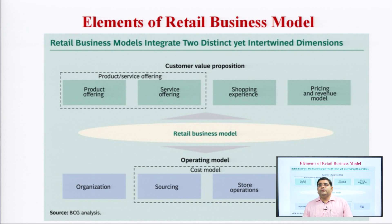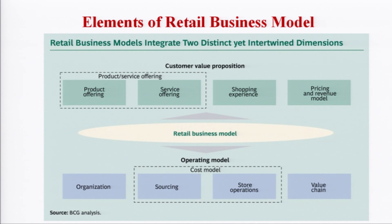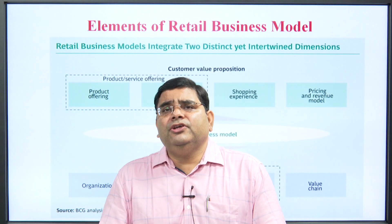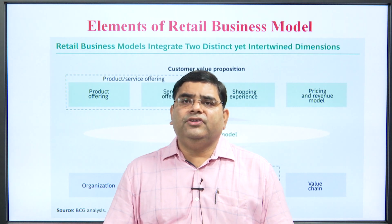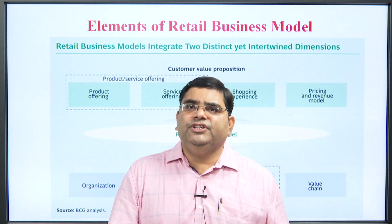A retail model integrates two distinct yet intertwined dimensions. The retail business model has two dimensions: first is customer value proposition and second is operating model. The customer value proposition involves the changing experience of customers — giving different product offerings and service offerings as per the need of the customer. Companies customize products, and regular R&D research work goes on to understand customer needs and preferences.